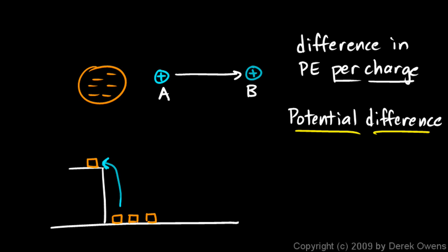Just as we can lift a whole bunch of masses to the top of the table — with each mass gaining a change in potential energy — we can move a whole bunch of charges from point A to point B, and for each coulomb of charge moved there's a certain change in potential energy. The units are joules per charge, and charge is in coulombs, so we get joules per coulomb.